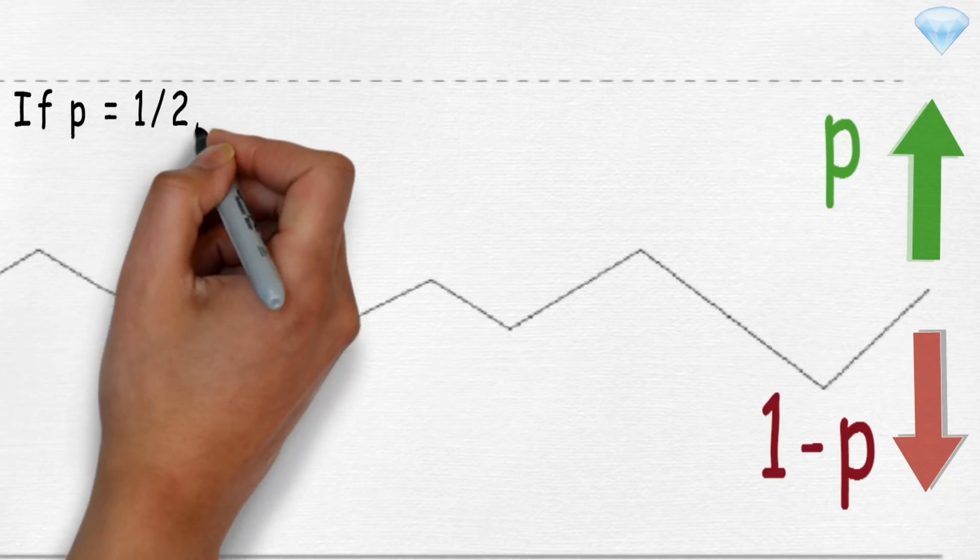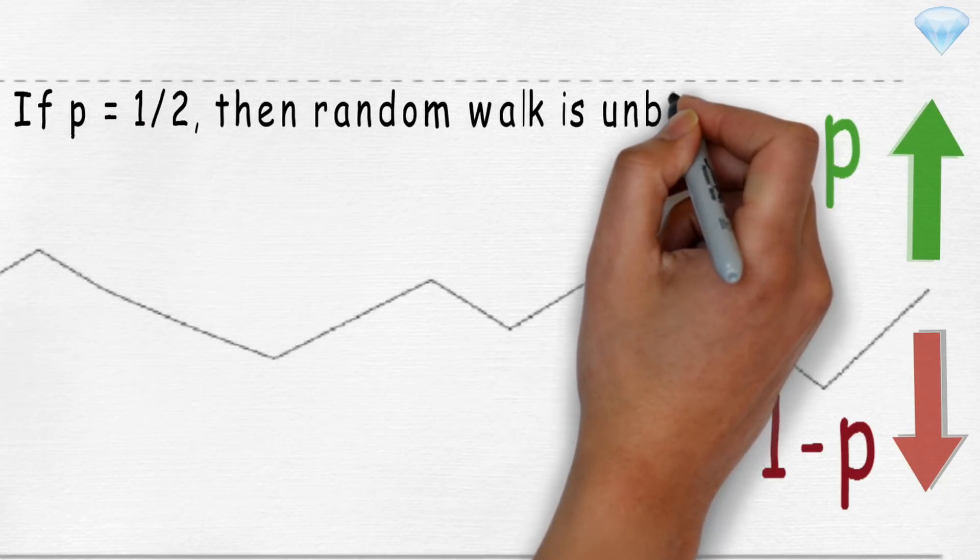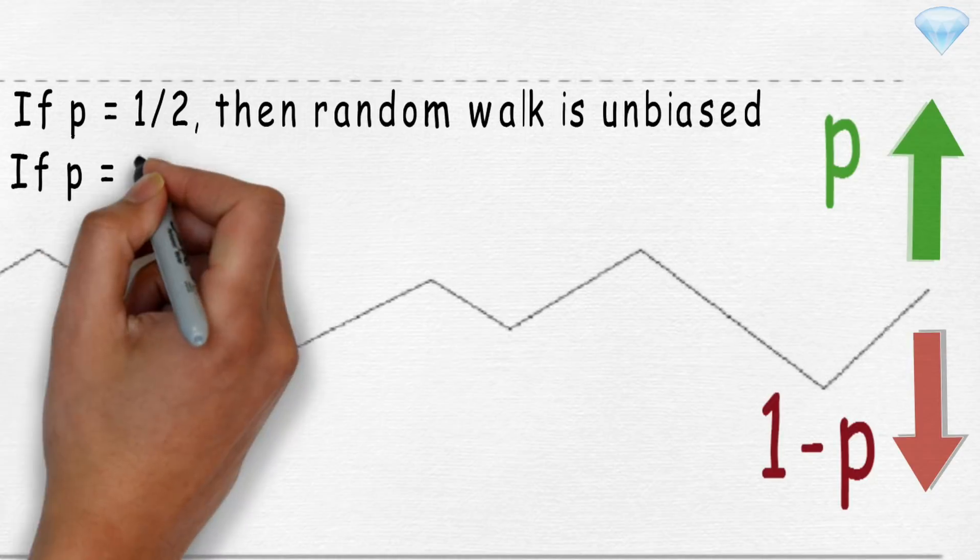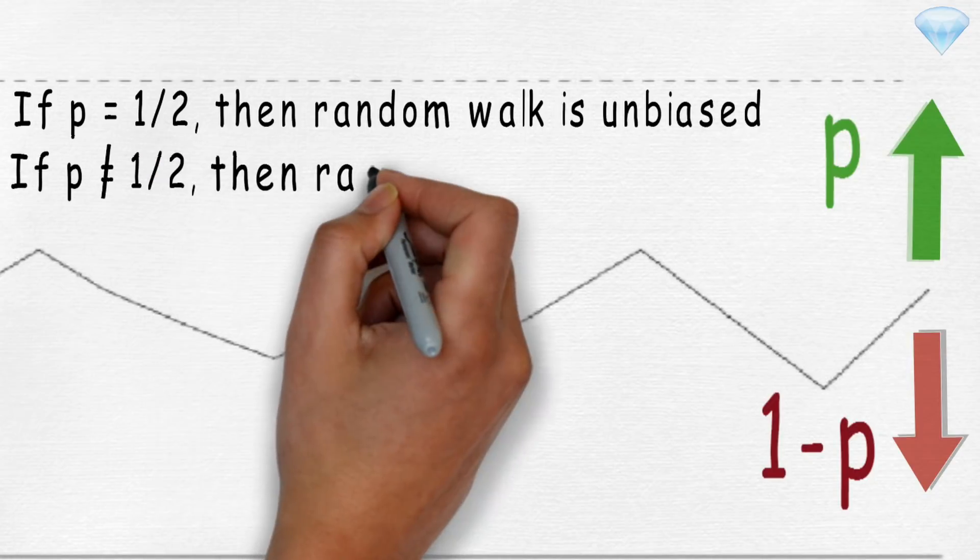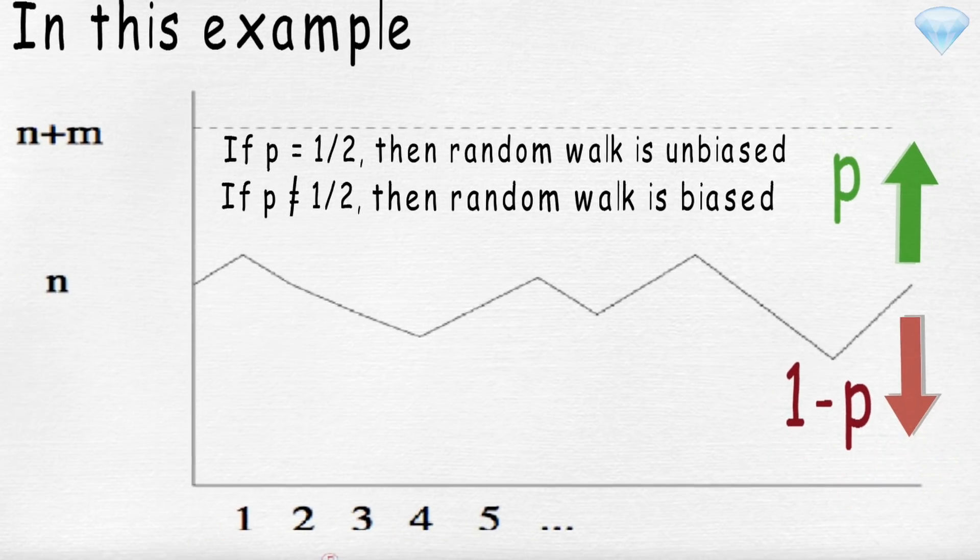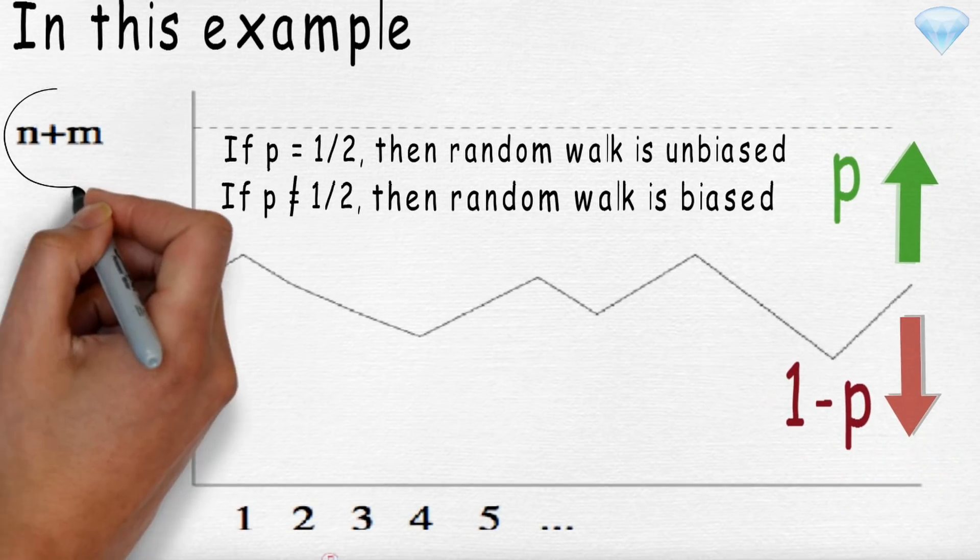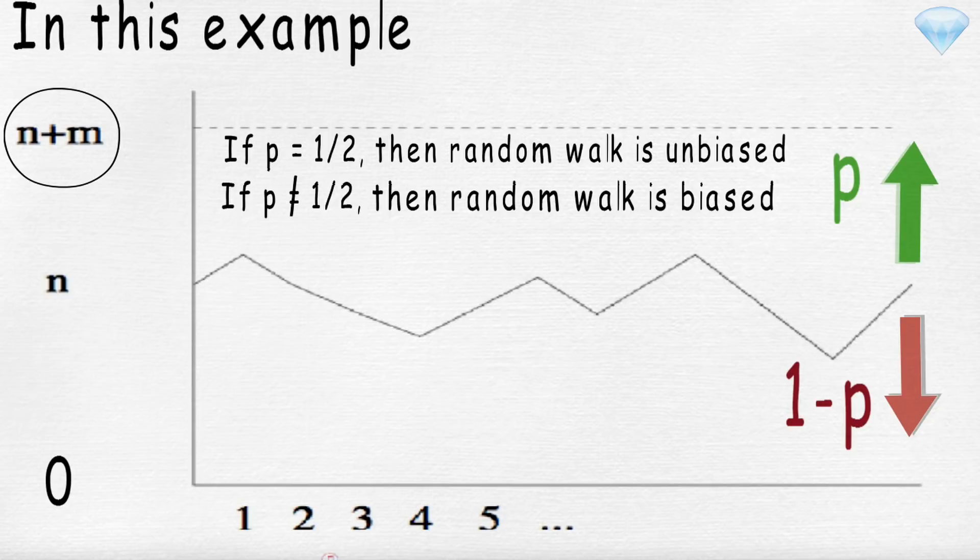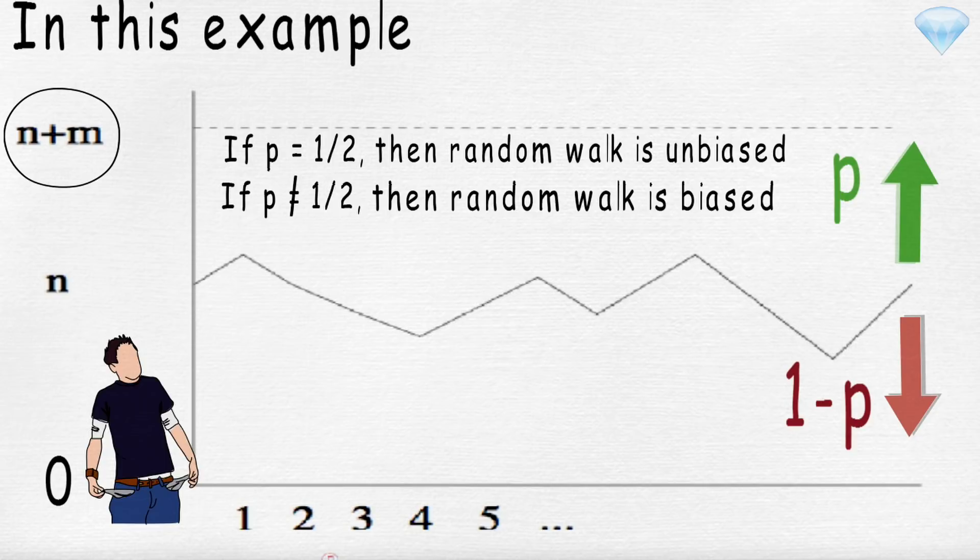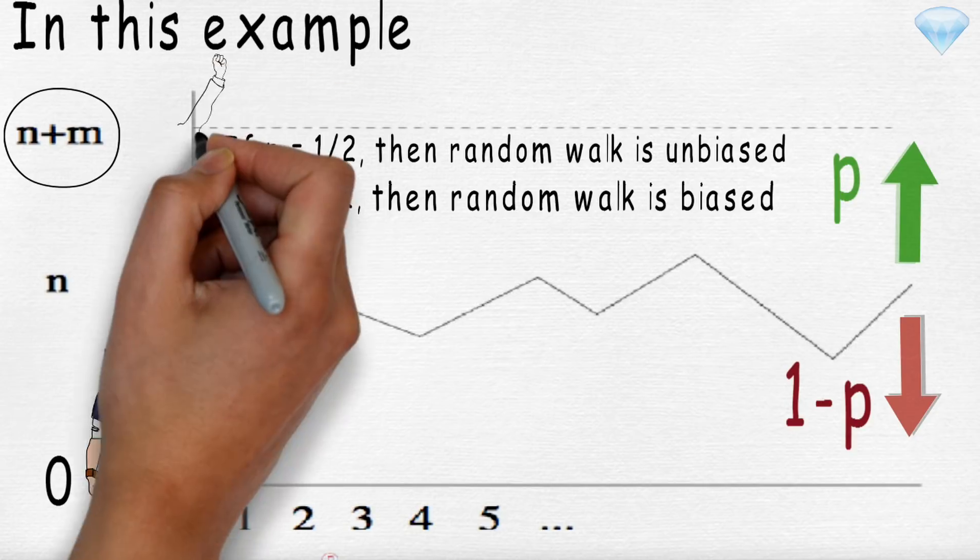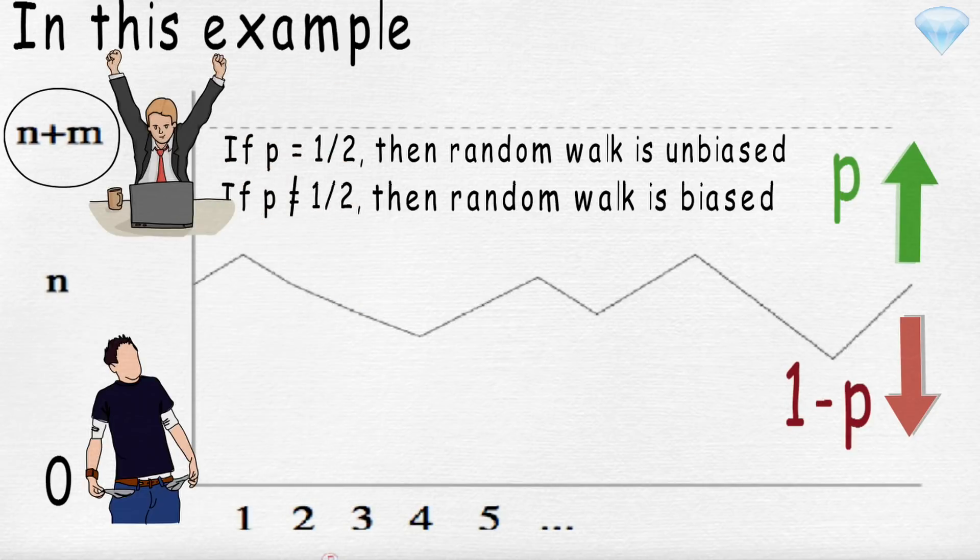If p equals one half, then the random walk is unbiased, whereas if p does not equal one half, then random walk is biased. We also have boundaries at zero and n+m dollars. If the walk hits the boundaries, then we stop playing if we quit when we go broke, meaning we will lose n dollars, or when we get to n+m, meaning we win m dollars.